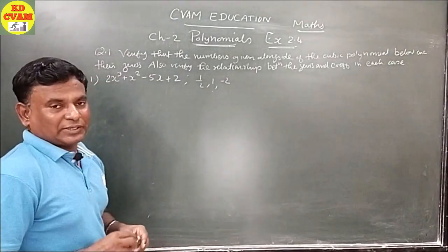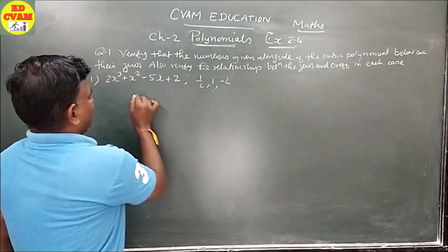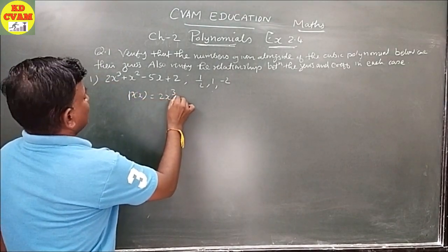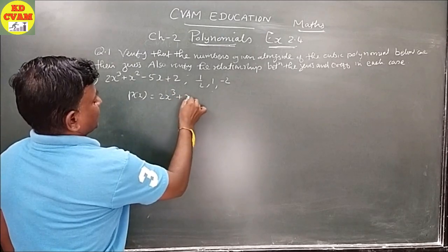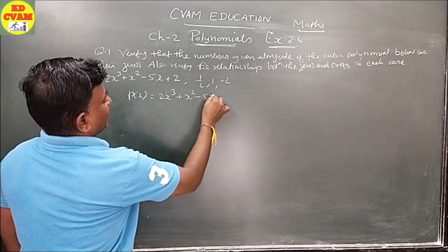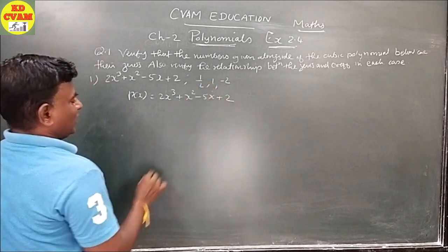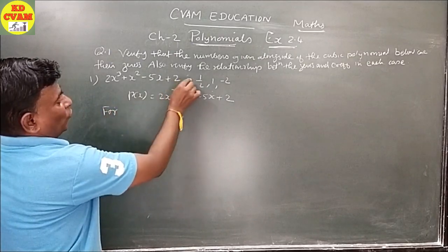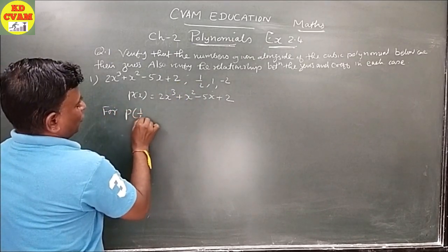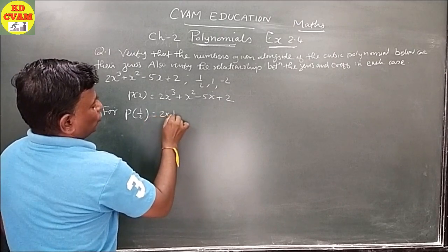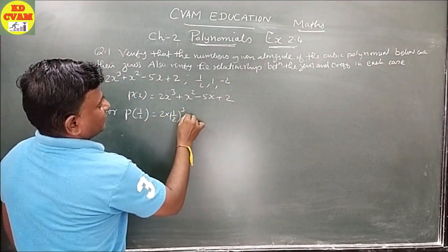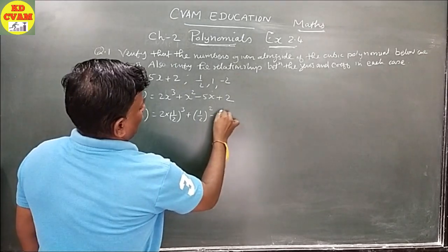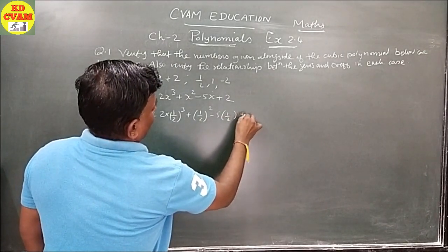Number 1, all of us are going to do. P of X = 2x³ + x² - 5x + 2. First of all, let us find P(1/2): 2 into (1/2)³ + (1/2)² - 5 into (1/2) + 2. This gives 2/8 + 1/4 - 5/2 + 2.